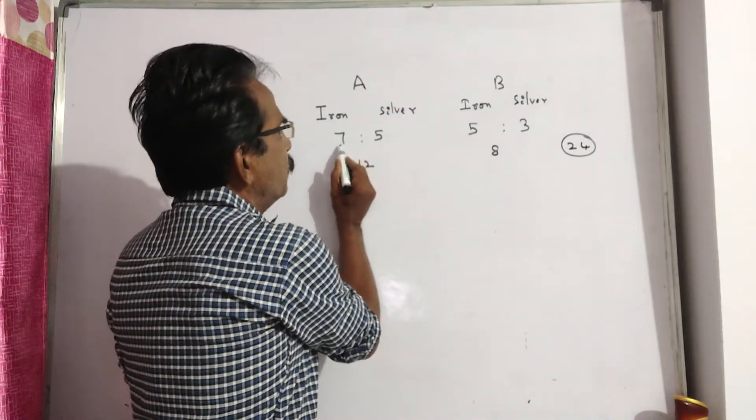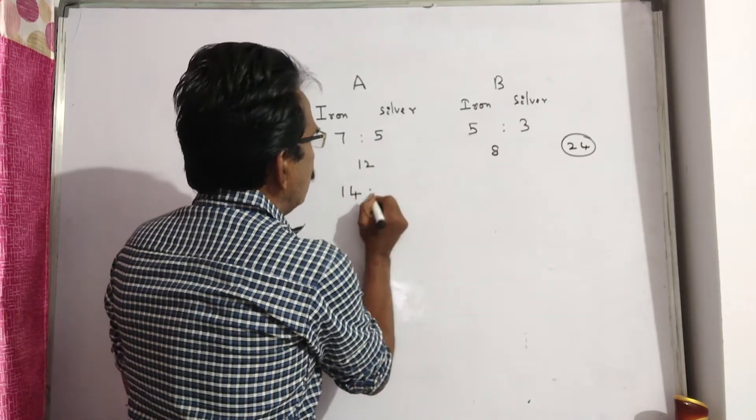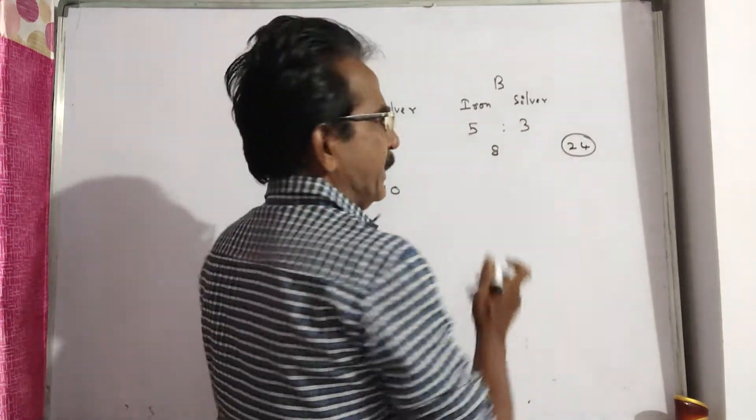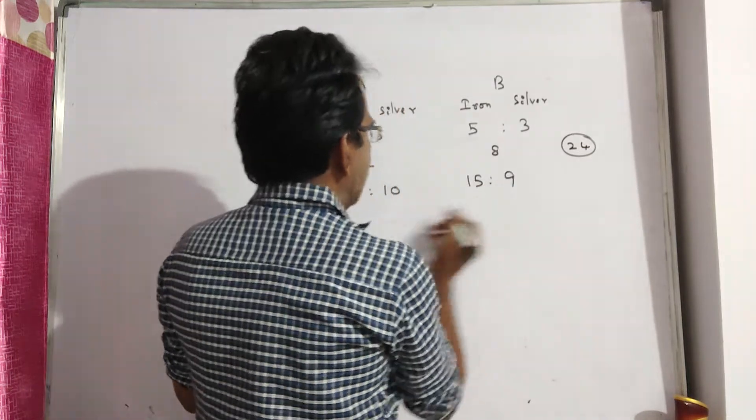This should be multiplied by 2: 2 times 7 is 14, 2 times 5 is 10. This ratio must be multiplied by 3: 3 times 8 is 24, 3 times 5 is 15, 3 times 3 is 9.